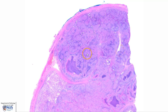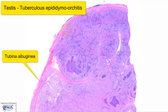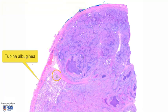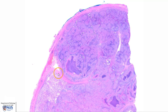Hello, this is a virtual microscopy slide of a case of tuberculosis epididymo-orchitis. We are looking at the tunica albuginea here of the testis. In this area is the testicular parenchyma, roughly demarcated here, and this is the region of the epididymis.